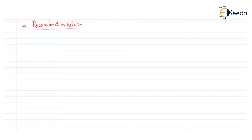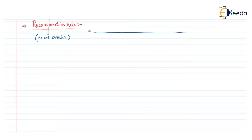So, recombination rate. According to the definition of recombination rate, it is the recombination of excess carriers. We are going to find the recombination rate for the excess carriers, and this is defined by the equation: excess minority carriers generated — that means, how much excess minority carriers had been generated due to the non-equilibrium process — divided by the minority carrier lifetime.